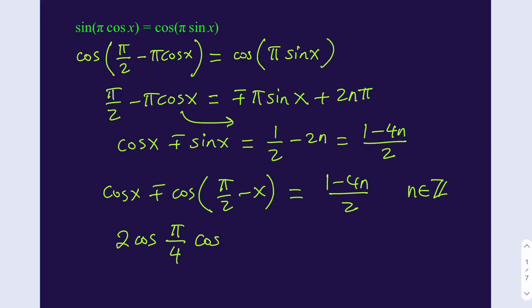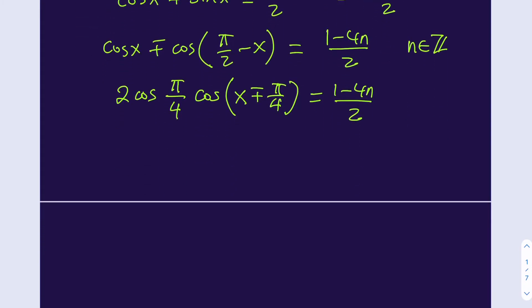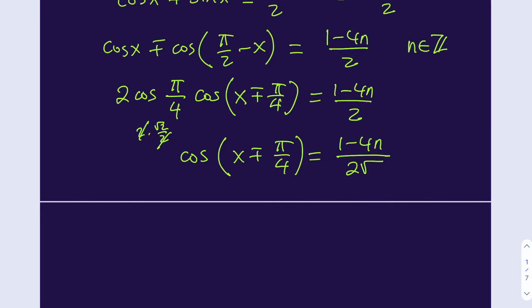From their difference, because of the plus or minus situation, we get two variations: x plus or minus pi over 4. Because of the division by 2, we have pi over 4 there. This equals 1 minus 4n over 2, where n is an integer. Our equation is getting simpler — we know the value of cosine pi over 4, which is root 2 over 2. The 2 cancels out, leaving root 2 as a coefficient. Dividing both sides by that, we end up with cosine of x plus or minus pi over 4 equals 1 minus 4n divided by 2 root 2.